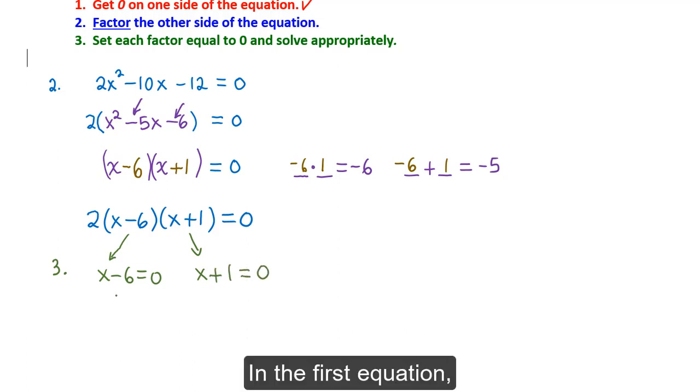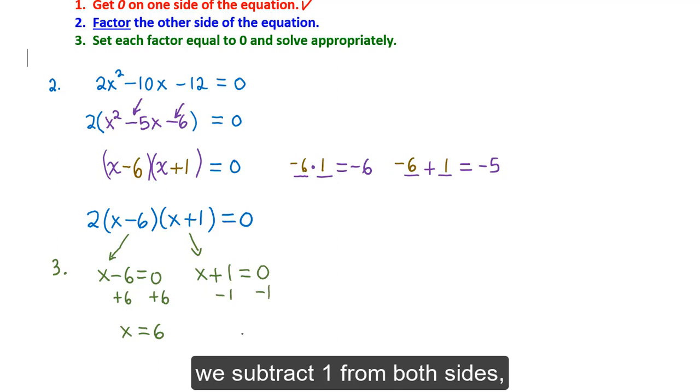In the first equation, we add 6 to both sides, and we get the solution x equals 6. In the second equation, we subtract 1 from both sides, and we get the second solution x equals negative 1. These are the two solutions of our quadratic equation.